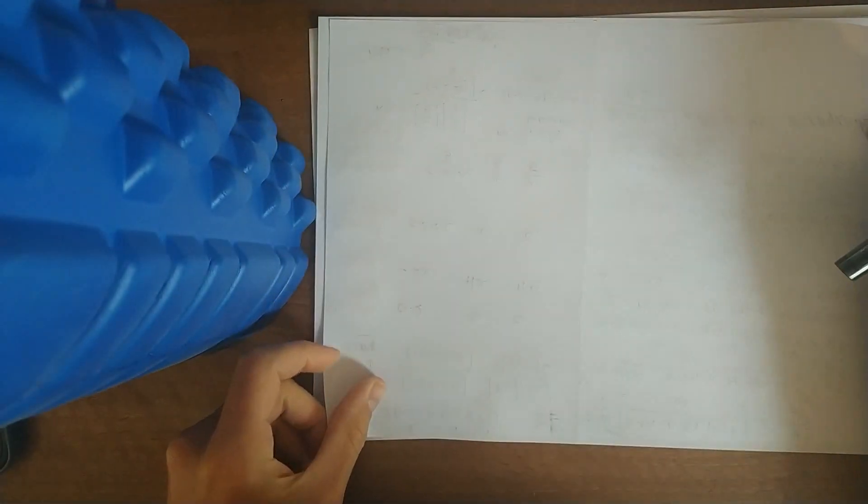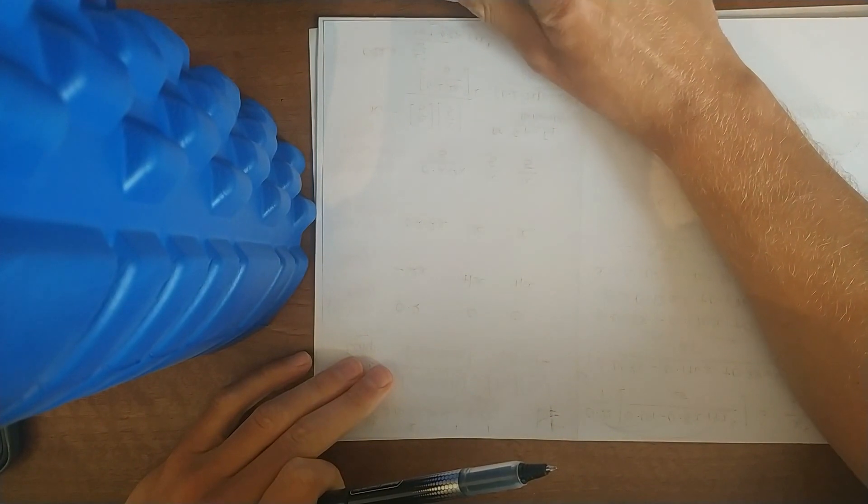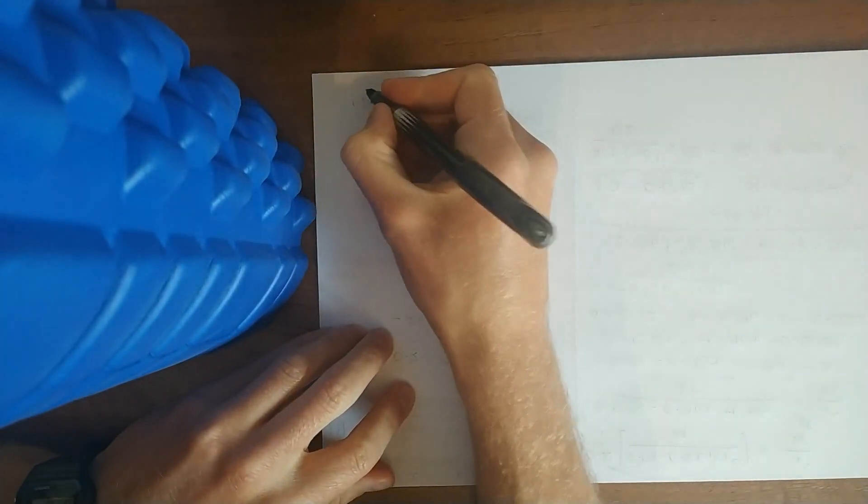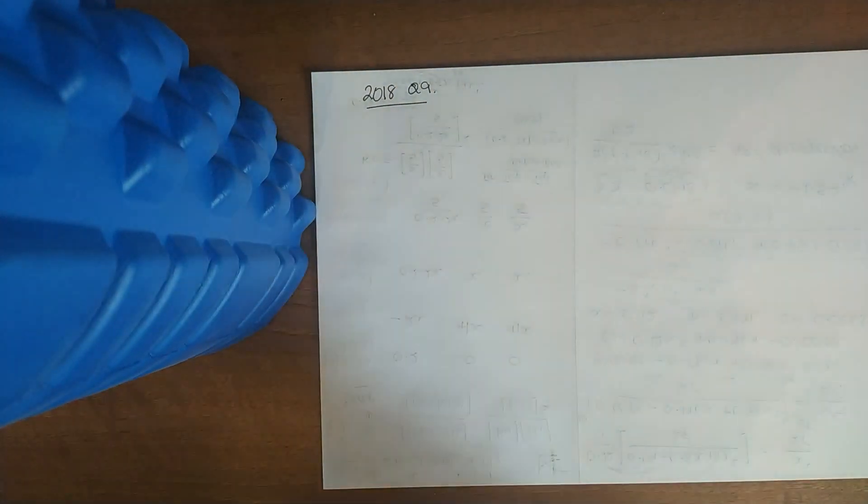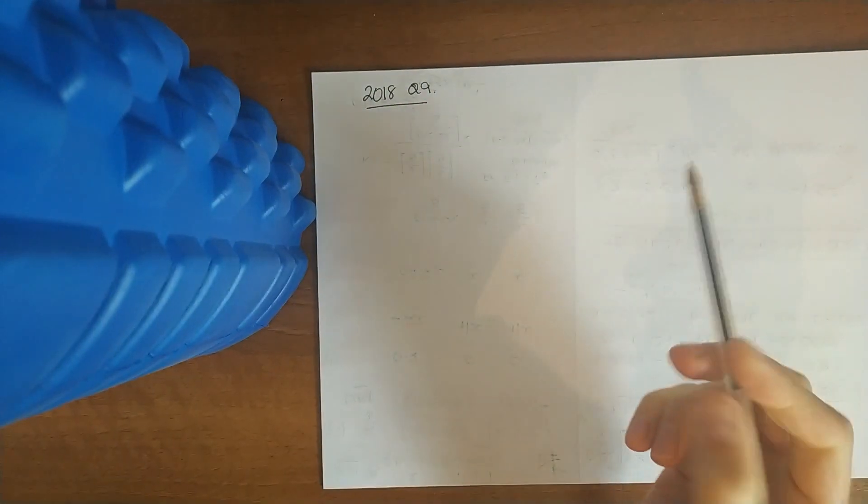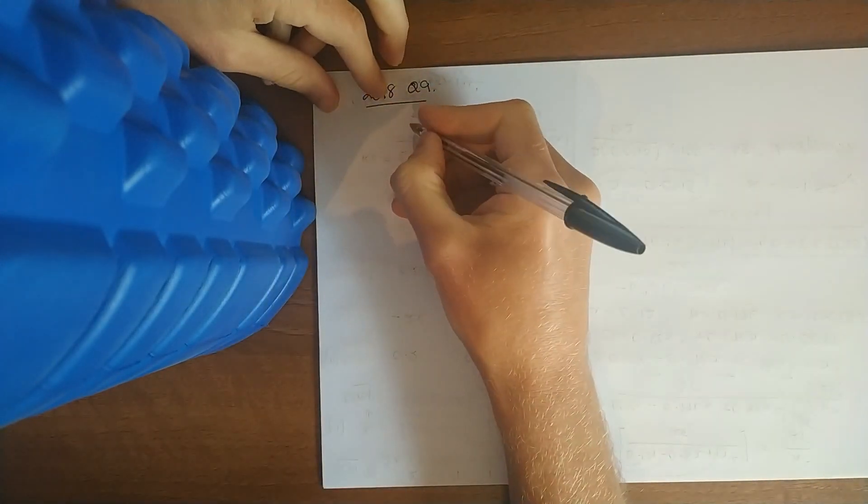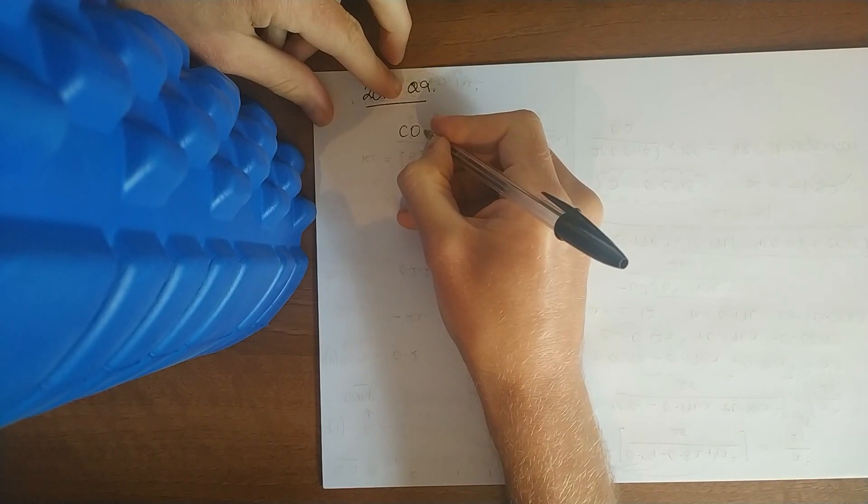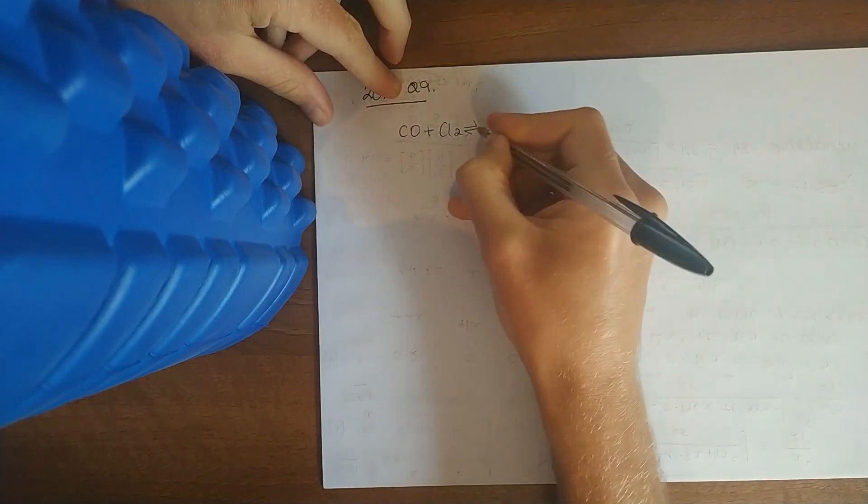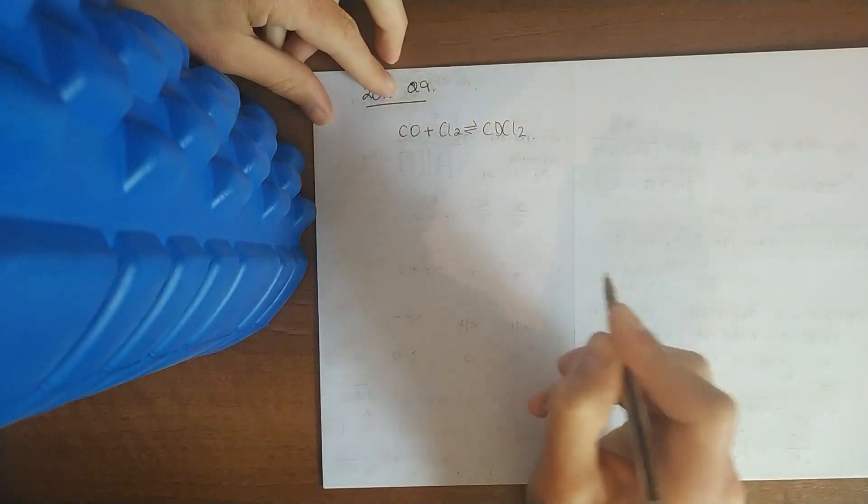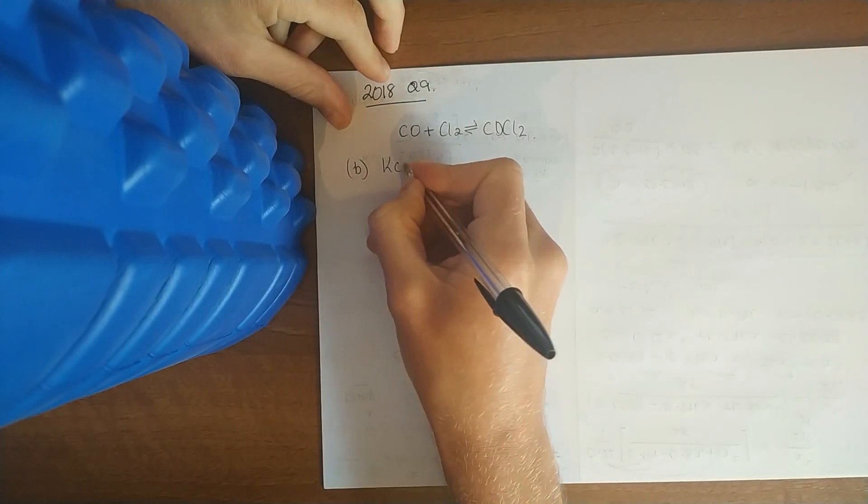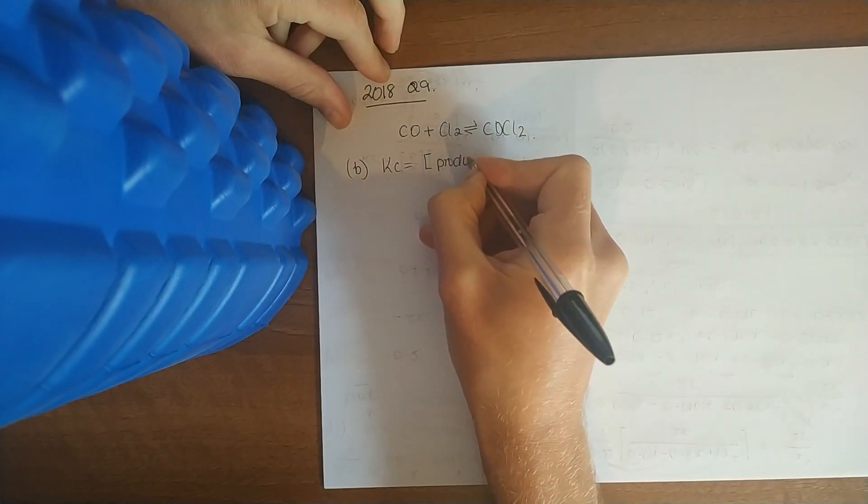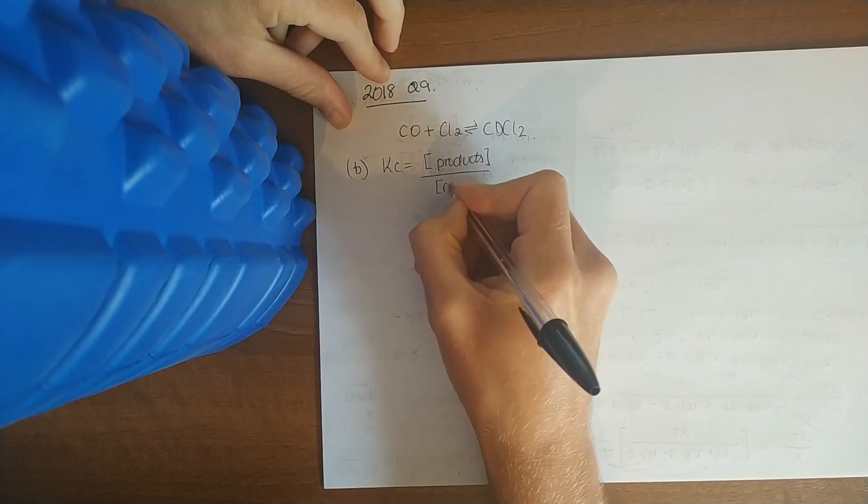We might do another one here. 2018 question 9. Write out the equation: CO plus Cl2 gives COCl2. What is meant by equilibrium? Write down KC. So we'll start with part B. It's your products over your reactants. The square brackets just denoting moles per liter. So the products COCl2 over CO times Cl2.